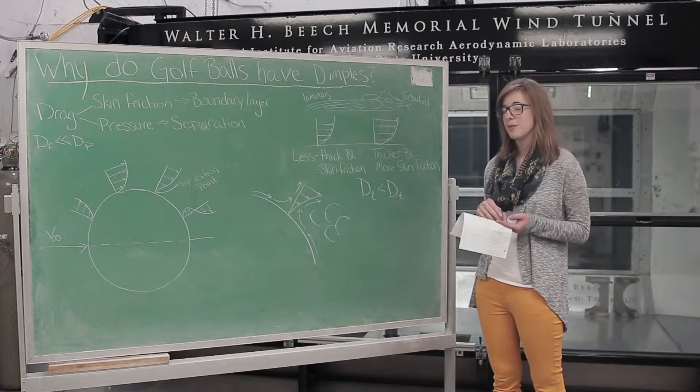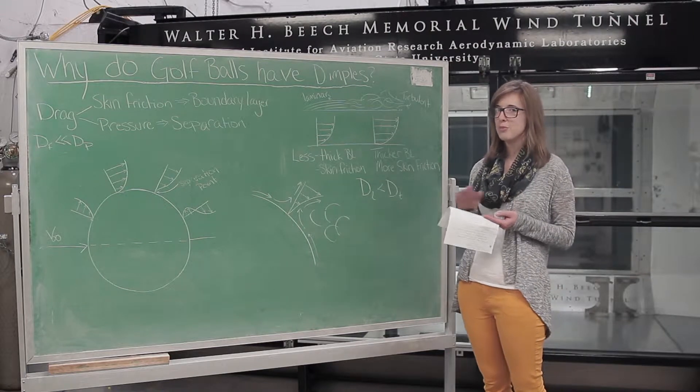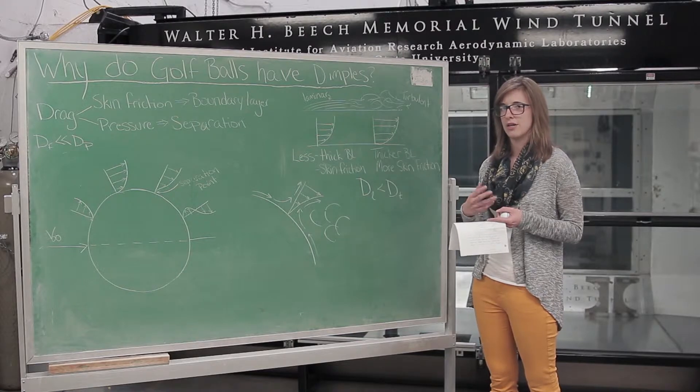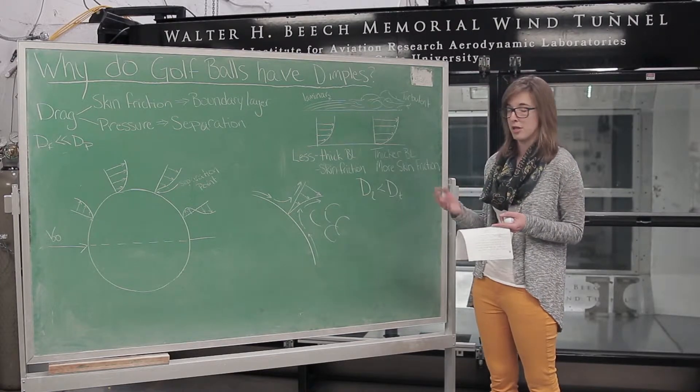That boundary layer can be laminar or turbulent. Laminar is very smooth layers of air flowing over, and turbulent is all those layers mixed together to create a very turbulent flow.